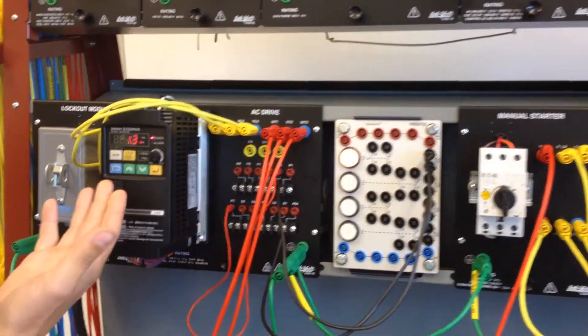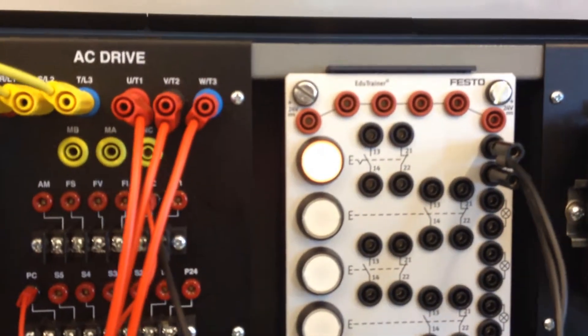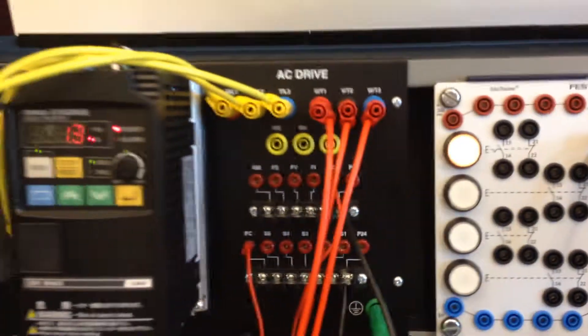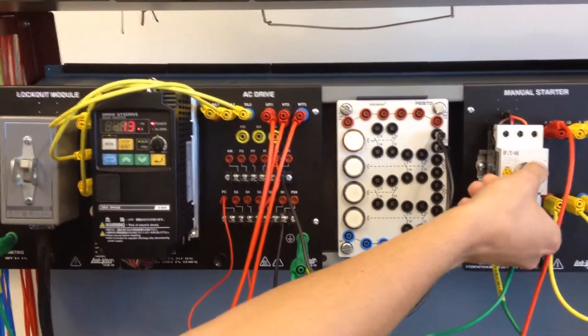As you can see our VFD is reading 1.3 amps, and our light is on to say that overcurrent has been reached. I can turn the load off and our light should go off and our motor will go back to drawing 0.9 amps.